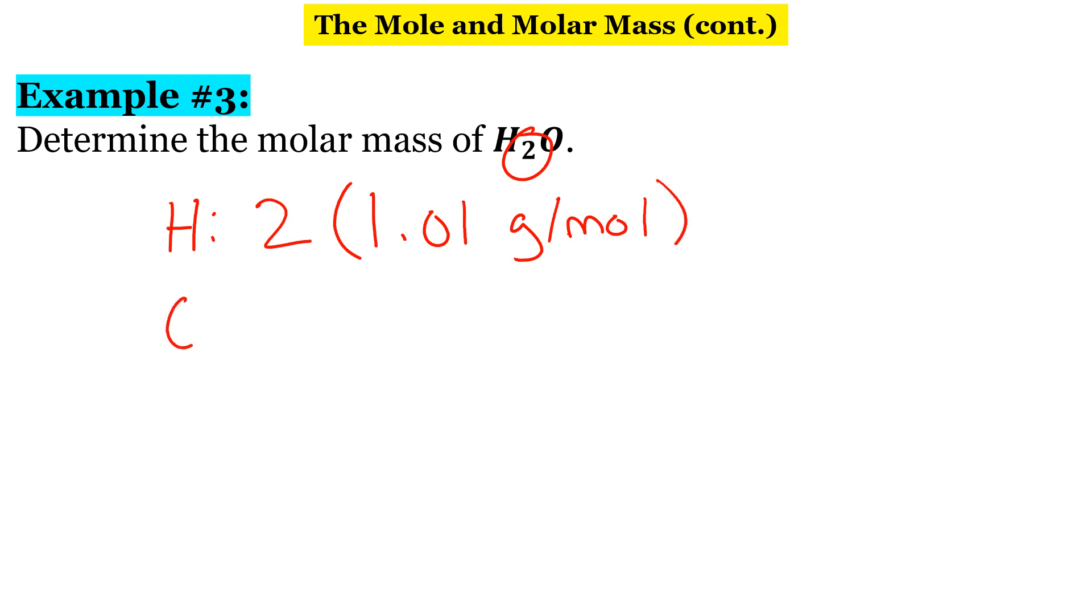And then for oxygen, we have just one of those. And its molar mass is 16.00 grams per mole. All right, so when we add these up, don't forget to multiply 1.01 times two first, and then add that to 16.00 grams per mole.